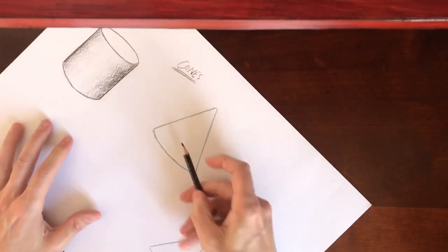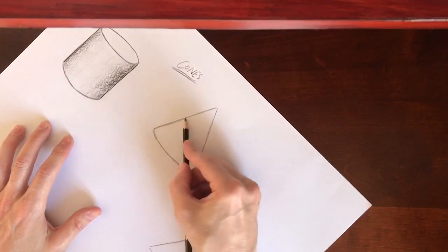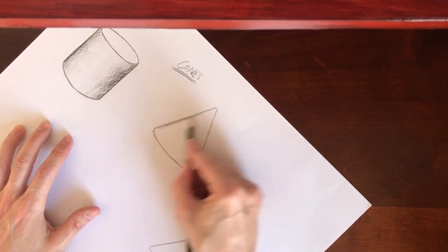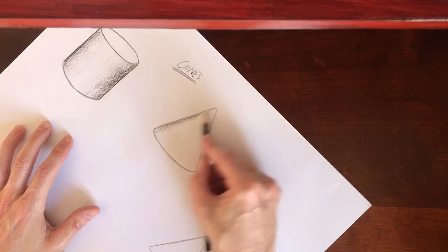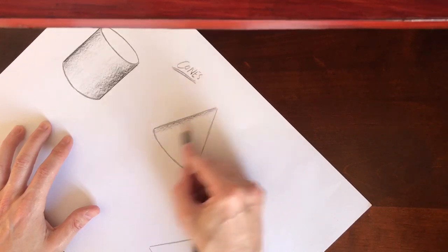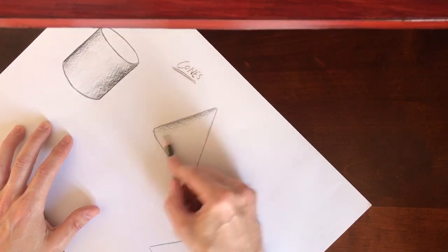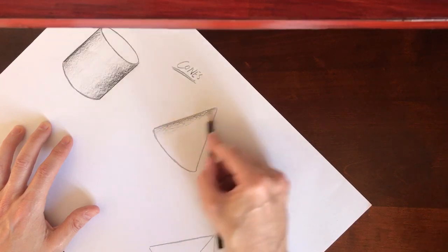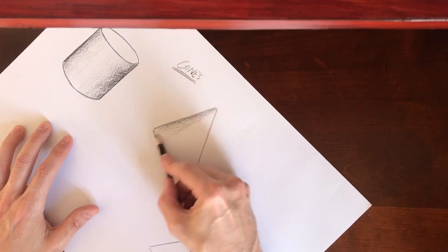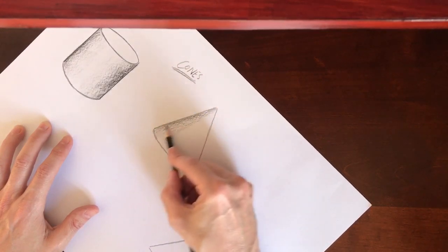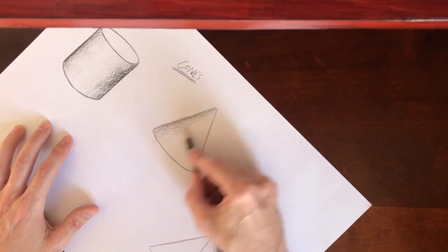Now the cone is similar to the cylinder. The only difference being that you're going to apply your gradient tone at an angle along the edge of the cone, and it will be slightly wider at the bottom than it is at the top. But again, trying to get this gradual gradient where it goes from dark to light as it comes away from that edge.